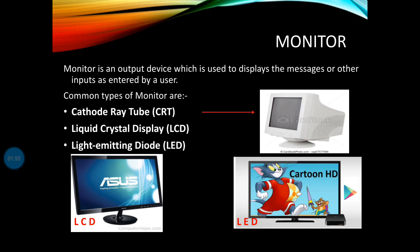The first type is the Cathode Ray Tube (CRT) monitor. This monitor is large in size and bulky. The second type is the Liquid Crystal Display (LCD) monitor, which takes up less table space compared to the CRT monitor.